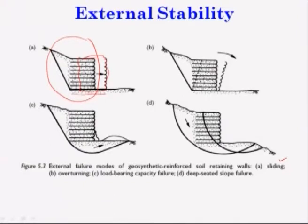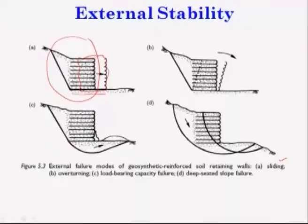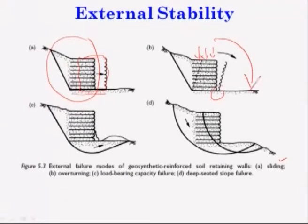The second external failure mode is overturning. If the wall cannot take the entire load coming to the reinforced earth wall, it may overturn at some point. The third is load bearing failure — the reinforced soil wall is placed over the foundation soil, and you check whether the bearing capacity is exceeded. This is also taken into consideration in external stability.